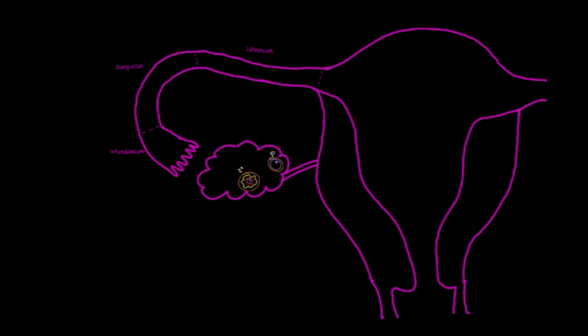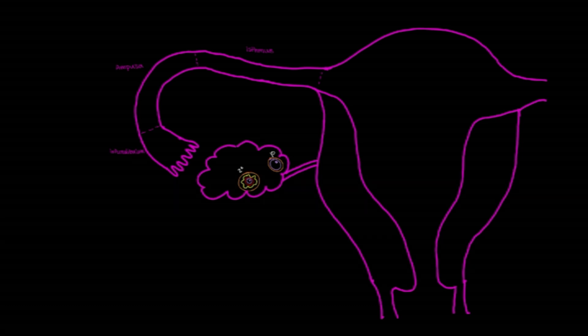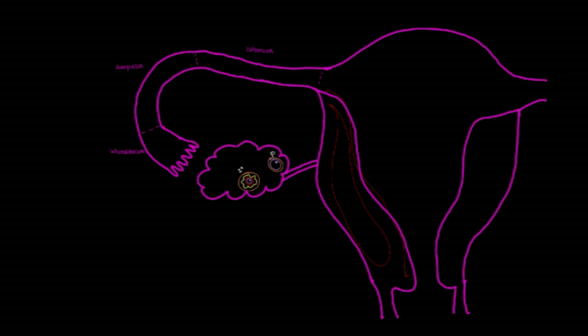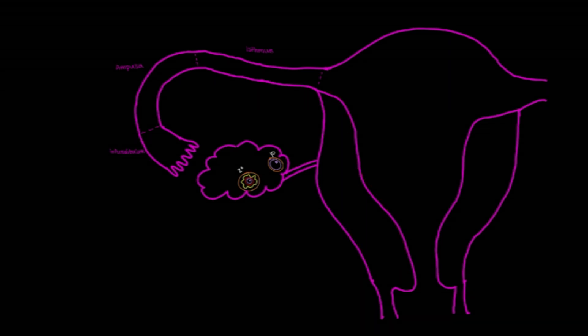What I have drawn here is the uterus, and then the uterine tube, and the ovary right here. Specifically looking at the uterus itself, there are three different layers. The innermost layer is called the endometrium, and then here would be the myometrium. This is that muscular portion of the uterus. And then finally, the outermost layer of the uterus is the perimetrium.